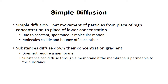The movement is due to molecules colliding and bouncing off each other, causing them to disperse from high to low concentration. Another example: spraying perfume in a classroom — students in the front smell a high concentration, while those in the middle smell it faintly, and students in the far back can't smell it at all, illustrating diffusion from high to low.